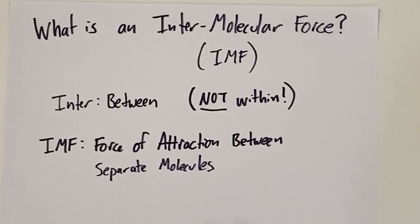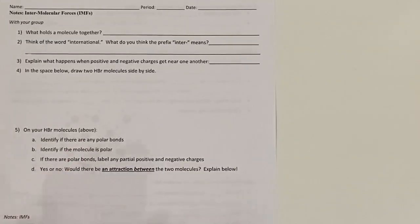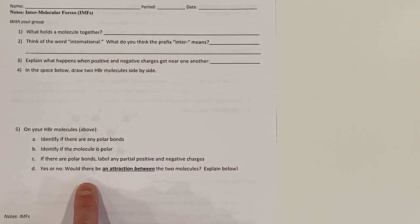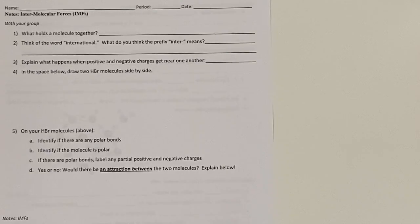Let's solve some problems here and figure out what they are. On our note sheet, we had to draw two HBr molecules side by side and then answer some questions about those molecules. Ultimately, from there, we're going to figure out about IMFs. Let's go ahead and do that right now.